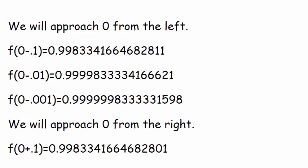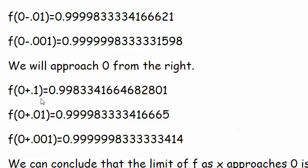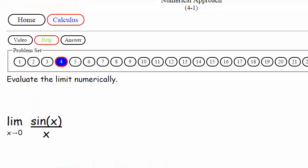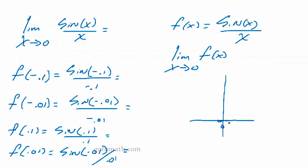And then coming in from the right-hand side, it's looking like it's approaching 1 also. So coming in from the left and the right, it's looking a lot like this graph is crossing right here at 1.